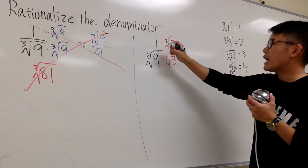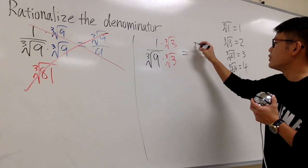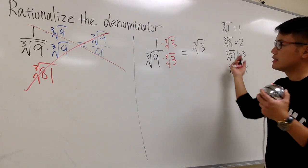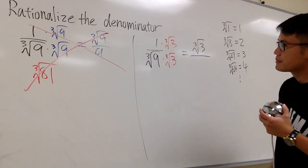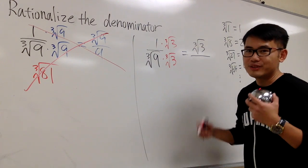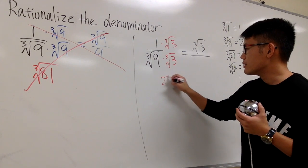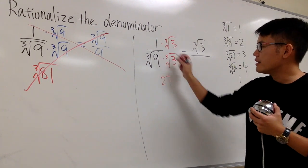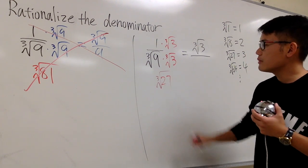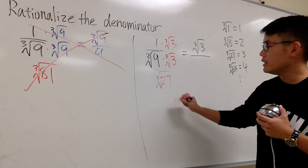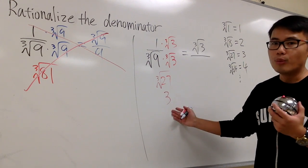And we see that on the top, we just have 1 times this, which is just the cube root of 3. That's it. On the bottom, let me just show you guys all the details, even though you know the answer already. Here, 9 times 3, they are both inside, which is going to be 27. And you take the cube root of this, cube root of 27, you know it's just a nice number 3. No more radicals.